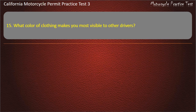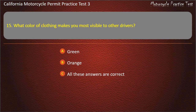Question 15. What color of clothing makes you most visible to other drivers? Green, orange, yellow, or all these answers are correct. Answer: All these answers are correct.